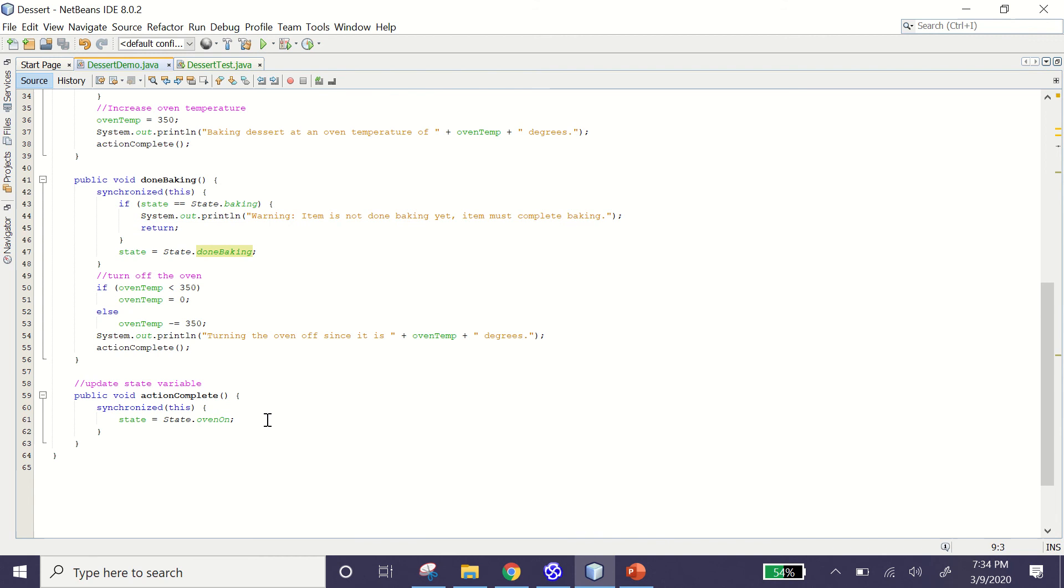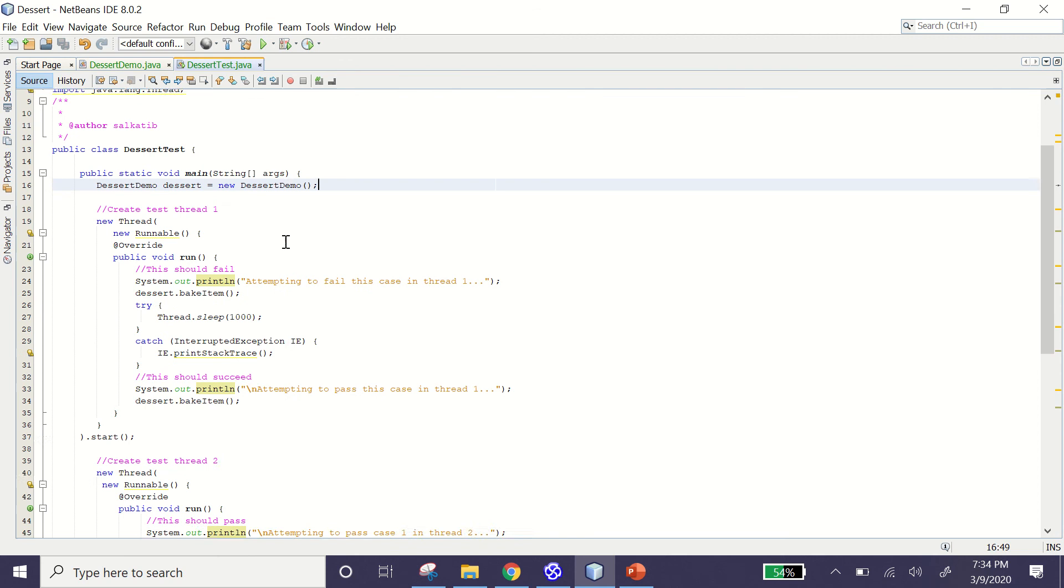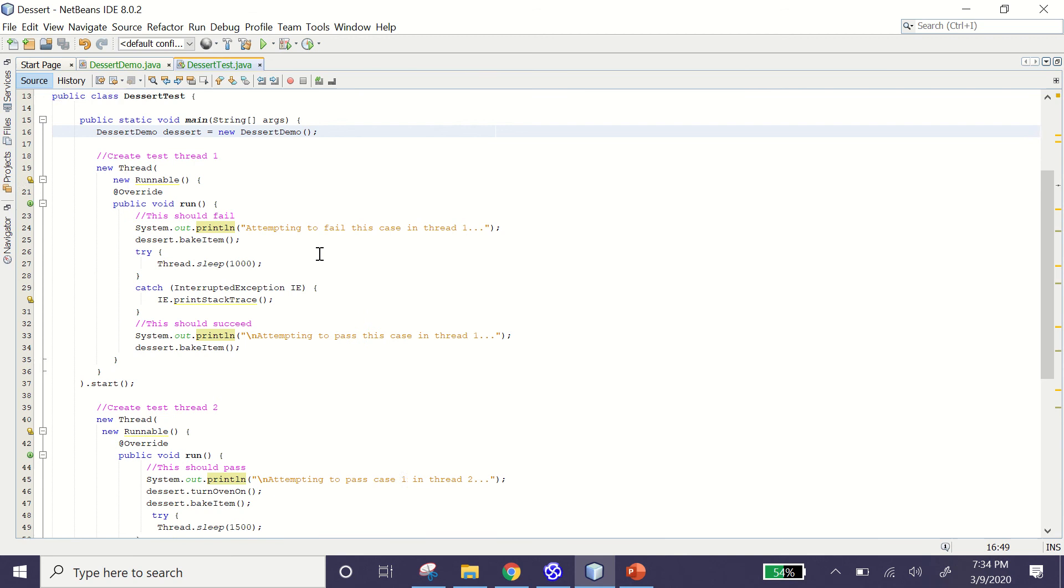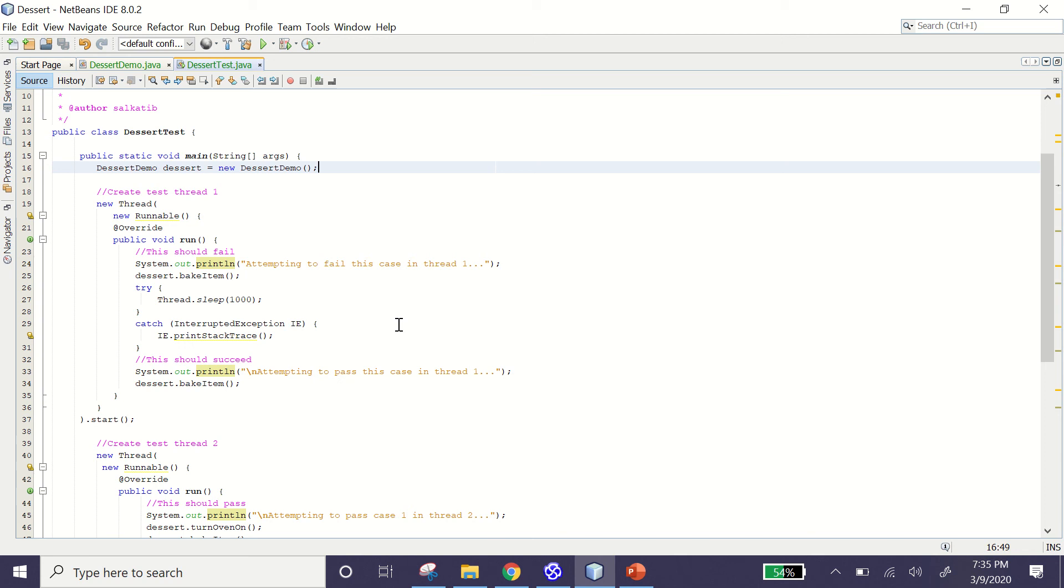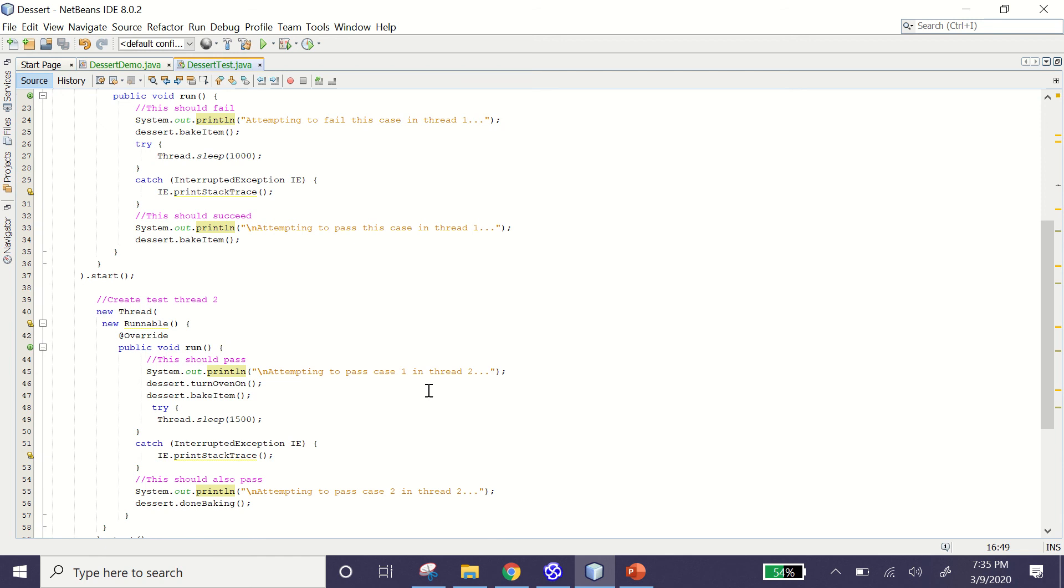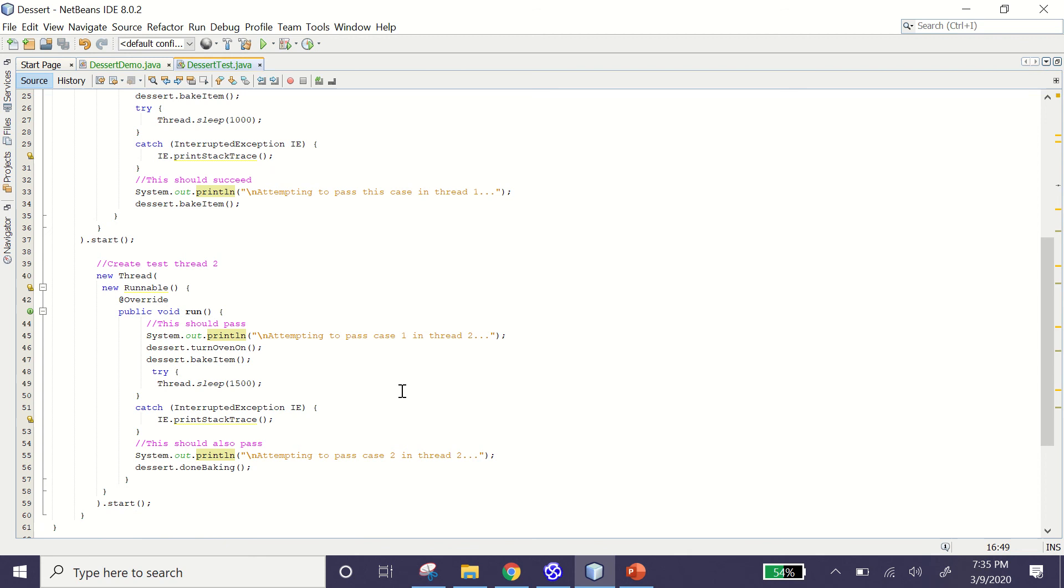And then if we go over here to our test file, I have two different threads for pass and fail cases. In thread one, the dessert tries to bake without turning the oven on, so that should fail. Then there's a sleep and a second attempt that should pass. In thread two, you turn on the oven and then you start baking. So that should pass because the oven was turned on beforehand. Then there's a thread sleep. Later, we try to have a finished baked dessert and that should work. So let's run this.